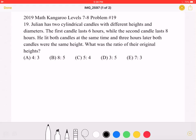This is the 2019 Math Kangaroo Level 7-8 Problem Number 19. Julian has two cylindrical candles with different heights and diameters. The first candle lasts six hours while the second candle lasts eight hours. He lit both candles at the same time and three hours later both candles were the same height. What was the ratio of their original heights?